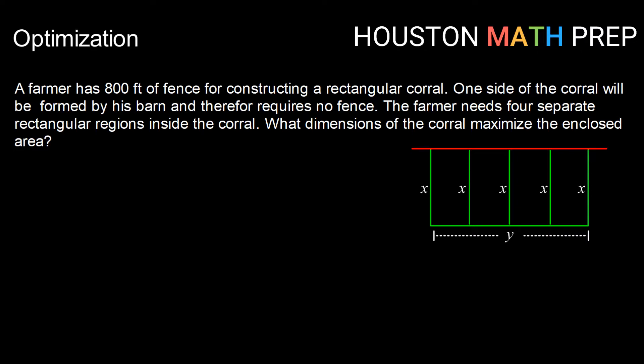So here we kind of have a visual representation of that. We have this red side here, that's the barn, so there's no fencing being used there. Then we have an x by y rectangle, and then we've got these three strips on the inside breaking our area in the middle into those four separate regions.